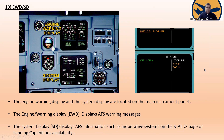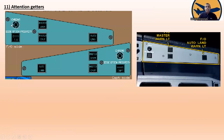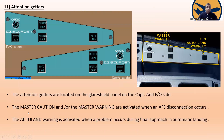The last item: attention getters. Here you can see the master warning and master caution, and the autoland warning. These are the attention getters, located on the glareshield panel for the captain and first officer. The master caution and/or master warning are activated when an auto flight system disconnection occurs. The autoland warning is activated when a problem occurs during final approach in automatic landing.